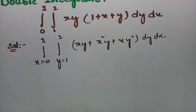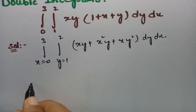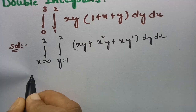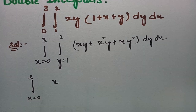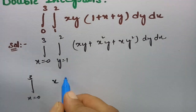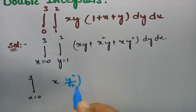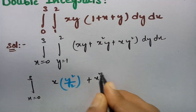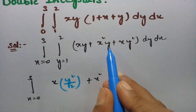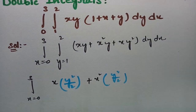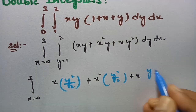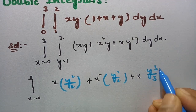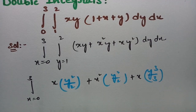So initially I am going to integrate with respect to y. x is constant, so for y this will be y²/2, plus x² times y²/2, plus x times y³/3, into dx.